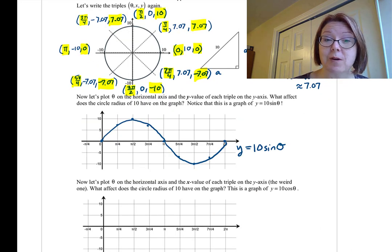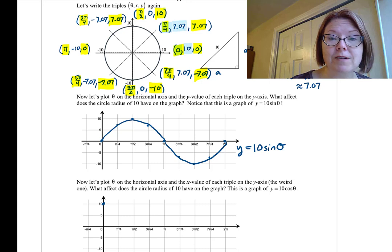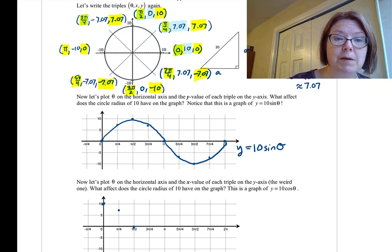We can follow the same process now to graph theta with the x value of each triple. Starting with 0, 10. Then π over 4, 7.07. Then π over 2, 0. Then 3π over 2, negative 7.07.